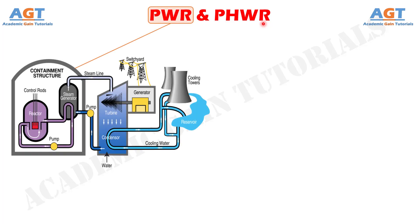A pressurized water reactor is a type of light water nuclear reactor. Pressurized water reactors constitute the large majority of the world's nuclear power plants. In a pressurized water reactor, the primary coolant is pumped under high pressure to the reactor core where it is heated by the energy released by the fission of atoms.